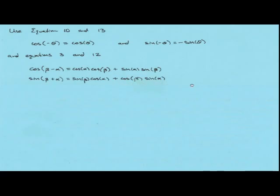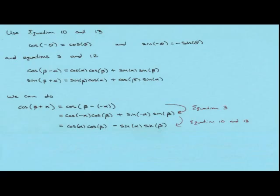We can take the cosine of beta plus alpha and rewrite it as the cosine of beta minus a minus alpha. Now we can use the identity for the cosine of the difference.